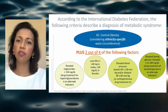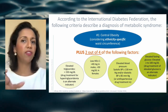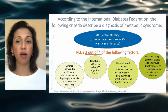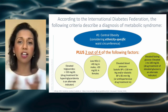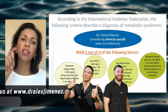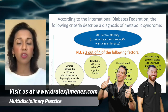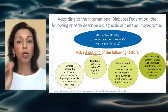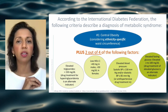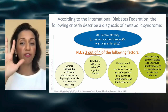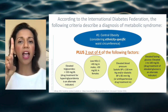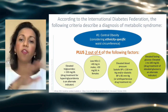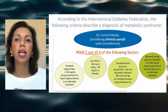There is an International Diabetes Federation that classifies the diagnosis a little bit differently. Since we are a global audience, it's worth mentioning. In the IDF criteria, it is required to have central obesity per ethnicity-specific cutoff for waist circumference — so instead of three out of five, you've got to have that one and then two out of the other four need to be met. The other criteria are the same but compartmentalized differently.